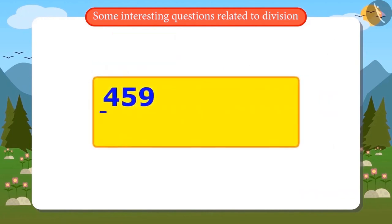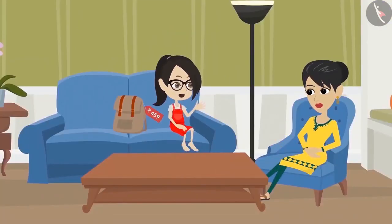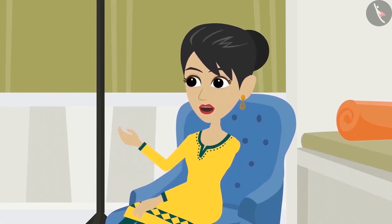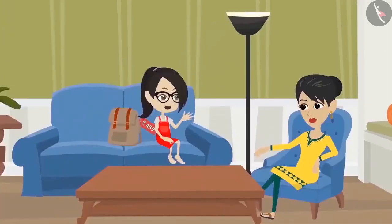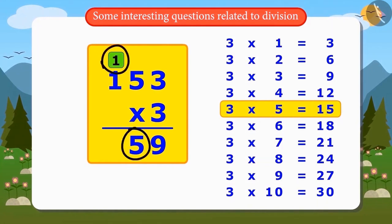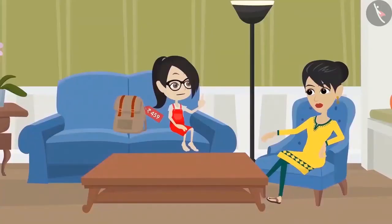That means if we divide 459 into 3 equal parts, one part will have 153. That means my old bag came for 153 rupees. But Mother, how will we know that this answer is correct? Very easy — multiply 153 by 3 and see if the answer comes to 459, then you divided it correctly. 3 threes are 9. 3 fives are 15, so 5 at the ones place and carry 1. 3 ones are 3, and adding the carried-over 1 gives 4. After multiplying 153 by 3, the answer came equal to 459. That means I have divided correctly.